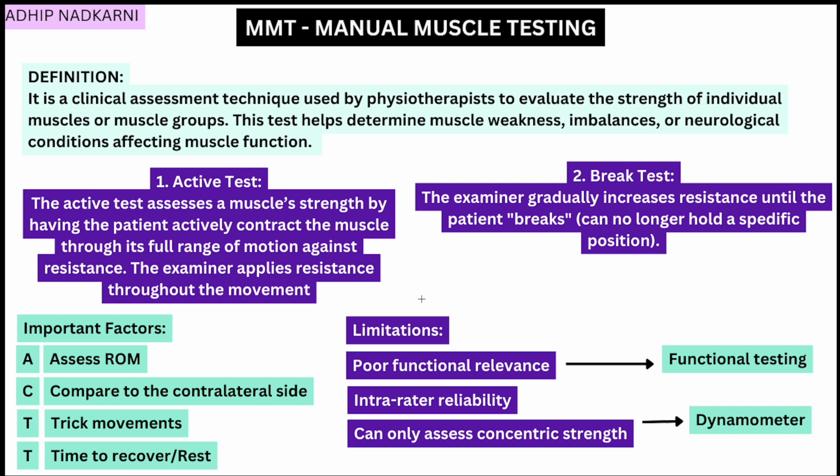Another limitation is intra-rater reliability — a stronger examiner might grade someone lower, while a weaker examiner might grade them higher. This can be addressed by using tools like a dynamometer, which provides objective data. Finally, MMT can only assess concentric strength due to the nature of the test. This can be addressed using an isokinetic dynamometer, which assesses both concentric and eccentric strength.